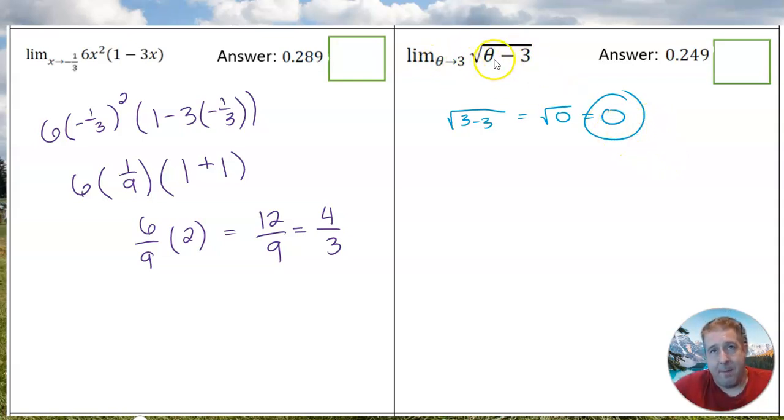Alright, over here. So we're going to plug away again, put three in for theta, and plug away. Three minus three is zero, square root of zero is zero. Pretty easy question.